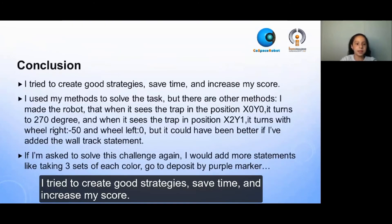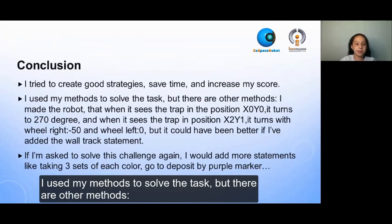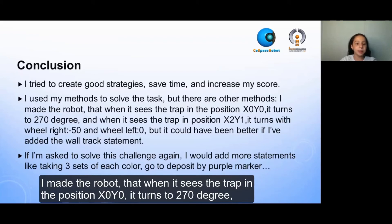I tried to create good strategies, save time, and increase my score. I used my methods to solve the task, but there are other methods. I made the robot that when it sees the trap in the position X0, Y0, turns to 270 degrees.